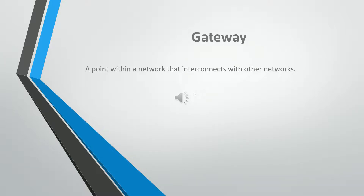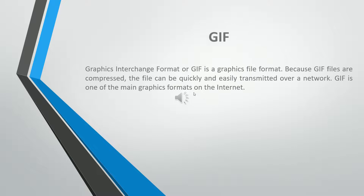A gateway is the point within a network that interconnects with other networks. Graphics Interchange Format (GIF) is a graphics file format. Because GIF files are compressed, the file can be quickly and easily transmitted over a network. GIF is one of the main graphics formats on the internet.